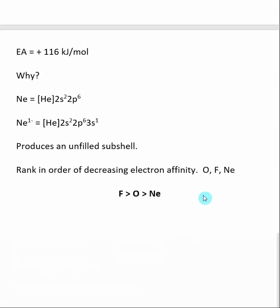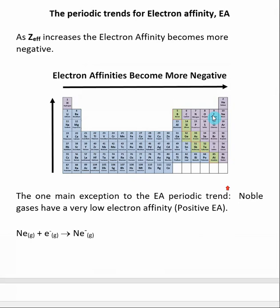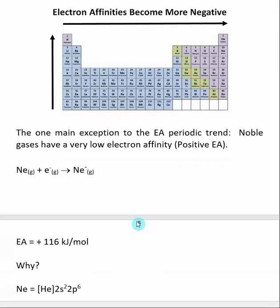If I ask you to rank in order of decreasing electron affinity of oxygen, fluorine, and neon, the element that's going to have the most negative electron affinity is actually going to be fluorine. It's the one furthest up and to the right in the periodic table, but it's not a noble gas. So the next one over is going to be oxygen, and then actually neon is going to be the lowest or have the least negative electron affinity, and that's because it is a noble gas.